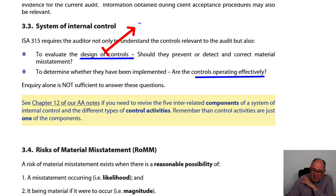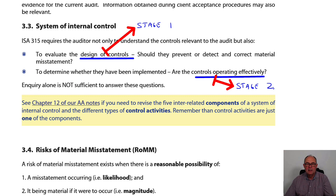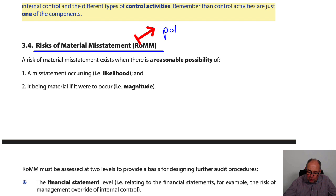Thinking about the inventory count: stage one, how do the count instructions look — do they look comprehensive? Stage two, let's see if the staff are actually obeying those instructions. But of course, the real crux of the audit is thinking about risk of material misstatement. The only thing the auditor is obsessed with is potential errors — including omissions — in the financial statements.